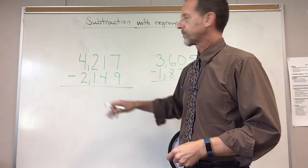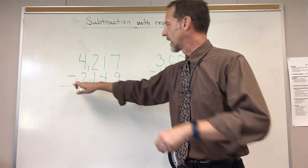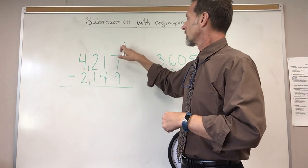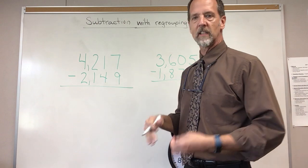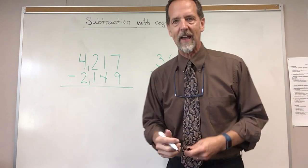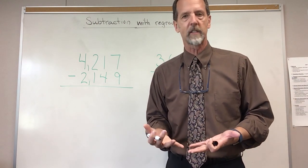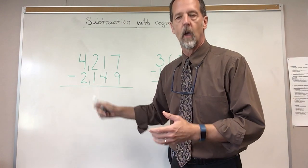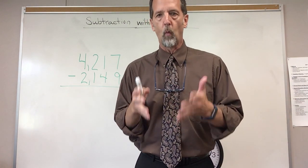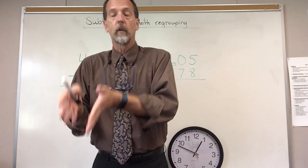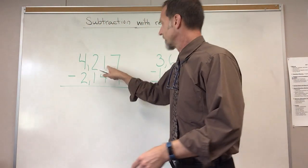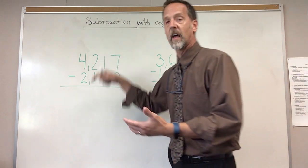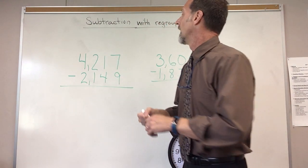Look at this problem. I've got 4,217 and I want to subtract 2,149. In the ones column I have 7 minus 9. Can I take 9 from 7? I can't — I have to get more ones. I don't have enough. What place do you go to get ones? The next place over — you go to the tens. In the tens place, do I have something I can borrow? I do. As long as there's not a zero, I can borrow from it.